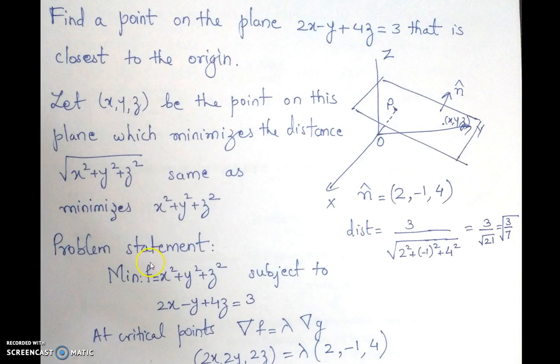Now let us look at the problem statement. So we have minimizing the function x squared plus y squared plus z squared, which is nothing but the square of the distance function. Because if for a particular choice of x, y, z this is minimum, it also implies that the distance will be minimum.